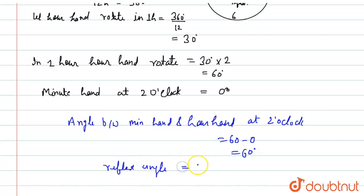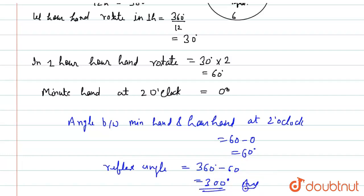Now we subtract from 360 degrees. The reflex angle will be equal to 360 minus 60, which is 300 degrees. This is our answer.